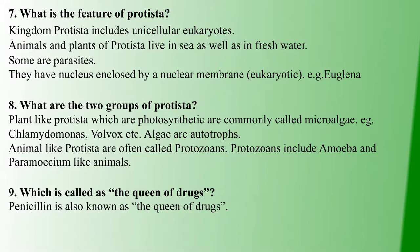Protozoans are animal-like. Examples include amoeba, paramecium, and other similar organisms. So Protista has two groups: micro-algae and protozoans.